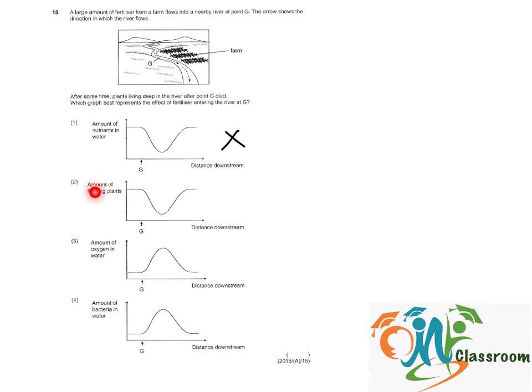Option 2: The amount of floating plants took a plunge. This is also wrong because with more fertilizer, the amount of floating plants should increase.